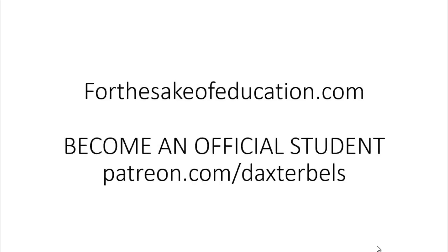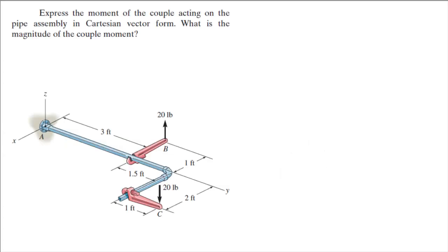For more videos visit ForTheSakeOfEducation.com or support me at patreon.com/DaxterBells. Alright guys, now we're going to do this problem where we have a couple moment acting on the pipe assembly, and they want you to express the moment that these couple forces are creating in Cartesian vector form, and find the magnitude of that couple moment.